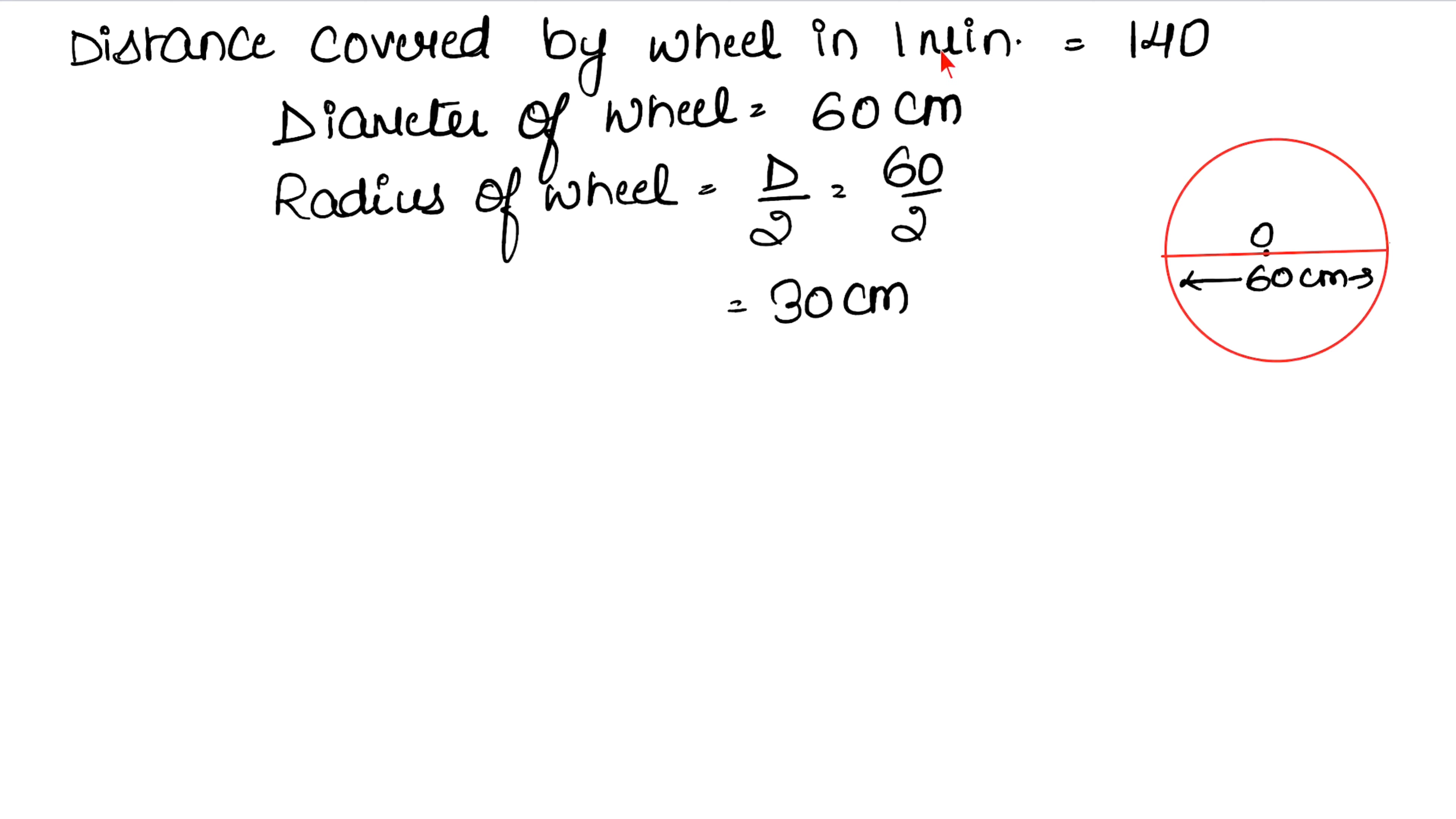We are doing 140 revolutions in one minute, but we need to know how much distance is covered. Distance covered by wheel in one revolution: the formula is 2πr. So 2 times π, we know is 22 upon 7, times r which is 30.